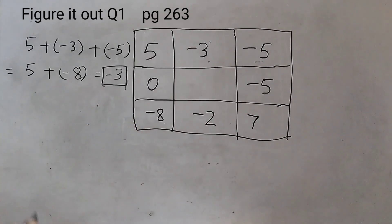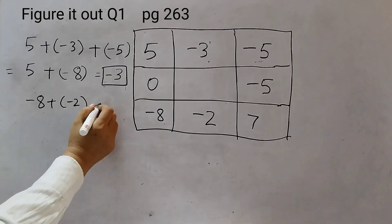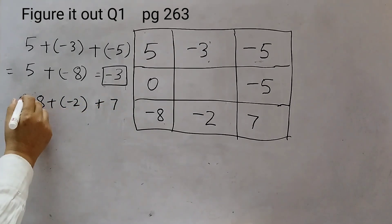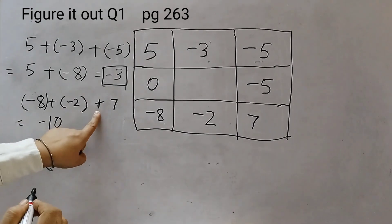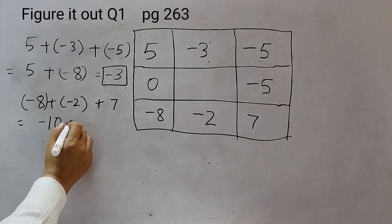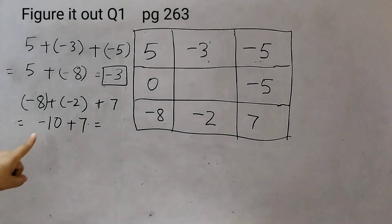Now, we will do the bottom row, which is minus 8 plus minus 2 plus 7. Both these numbers have minus sign. So, if they have the same sign, we add up the numbers. 8 plus 2, 10 and put the minus sign plus 7.